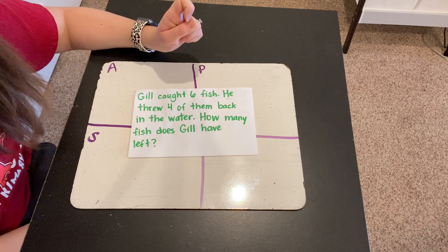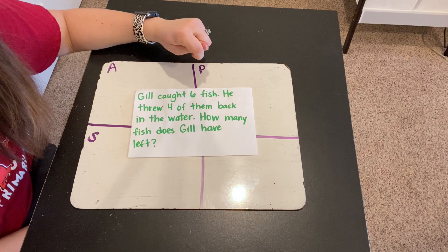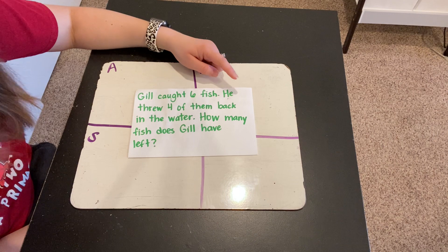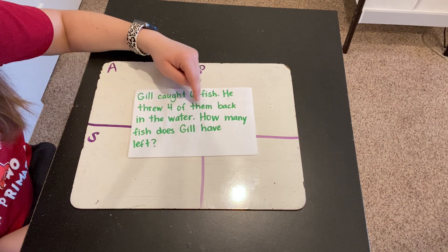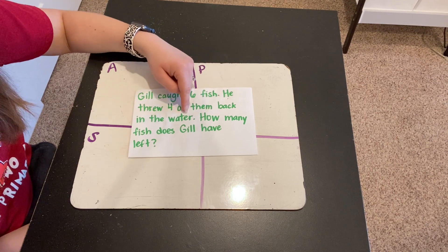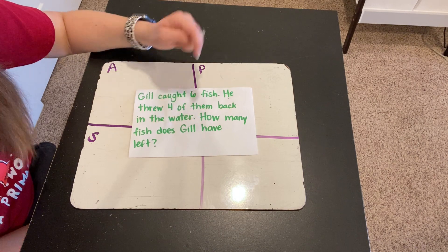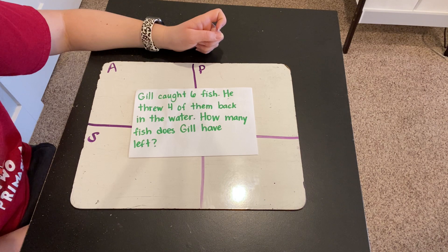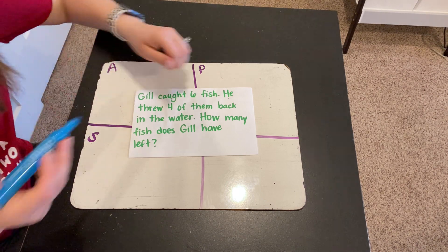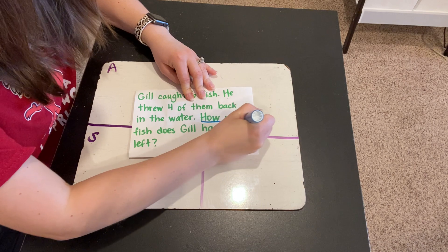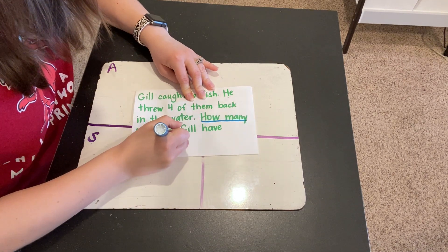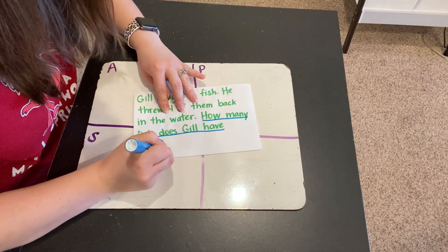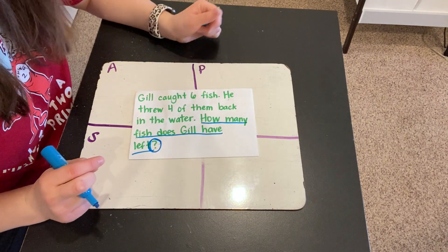Let's read this one more time. And this time, let's listen really closely for the question that we're being asked. Gil caught six fish. He threw four of them back in the water. How many fish does Gil have left? What question are we being asked to solve? How many fish does Gil have left? It ends with a big old question mark. So this is the question that we're being asked to solve.